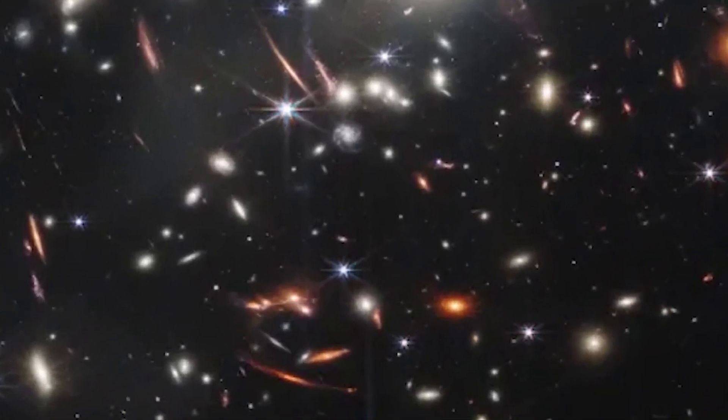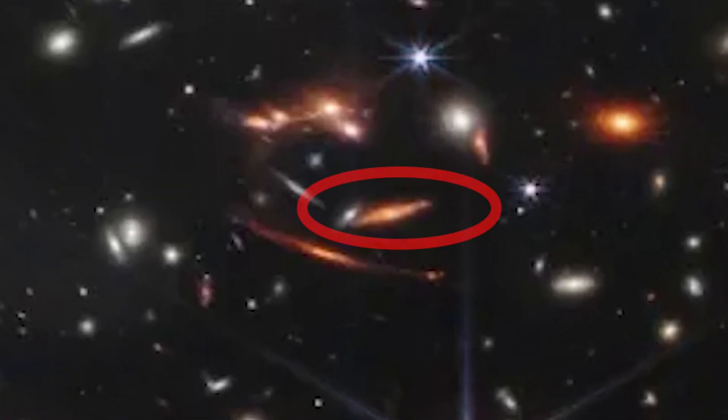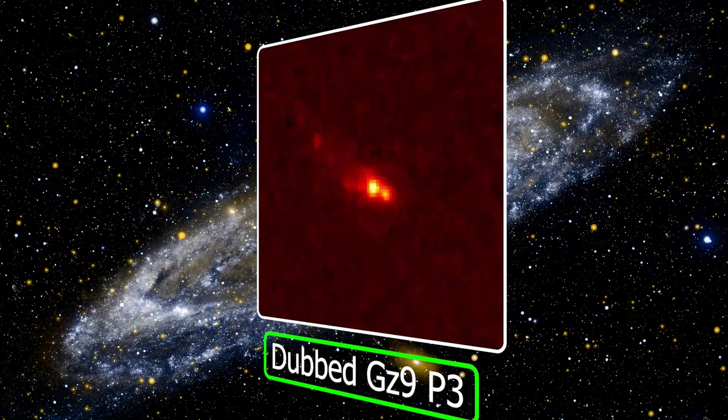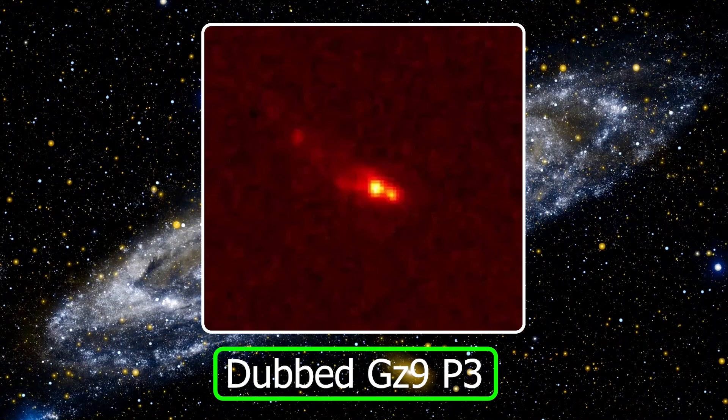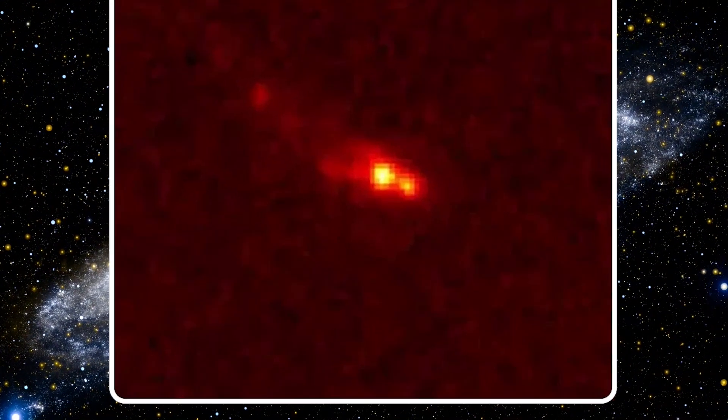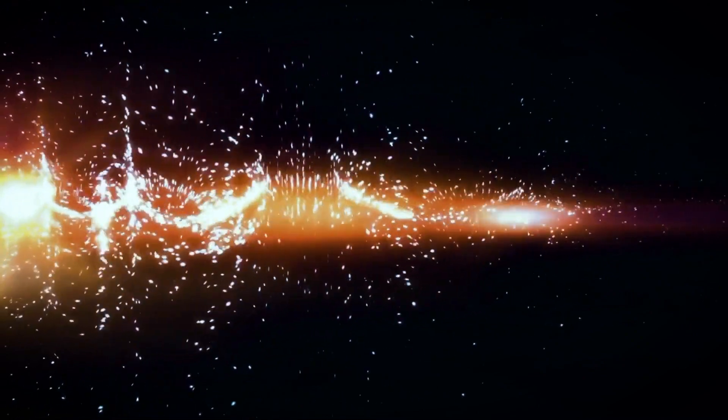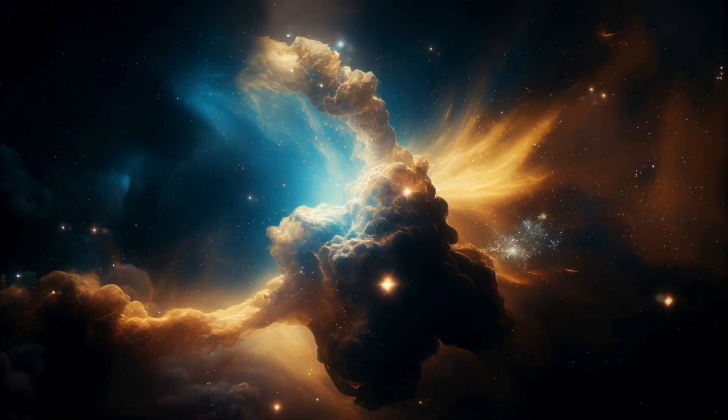Webb's observations unveiled the point of light as a primordial galaxy, significantly more massive and developed than anticipated. Dubbed GS-9P3, this galaxy resides at a redshift of z=9.3, offering a glimpse into its state a mere 510 million years after the Big Bang.